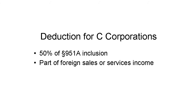A U.S. shareholder that is a domestic corporation, meaning incorporated in a U.S. state or in D.C., gets a deduction of 50% for its overall Section 951 Cap A inclusion. This is really as straightforward and simple as it sounds. See the International Tax Channel video on this and other aspects of the deduction under Section 250. Individuals don't get this deduction.